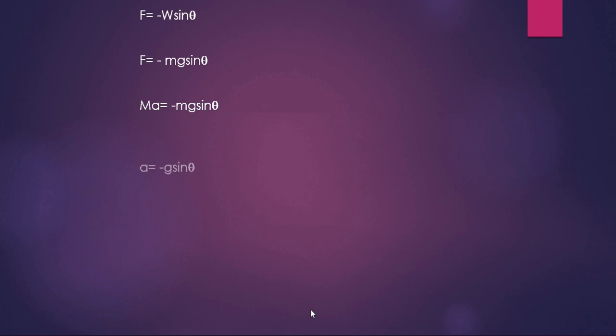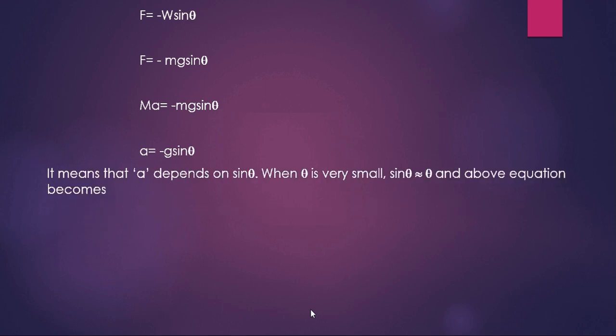Dividing both sides by m, the masses cancel, giving acceleration a = −g sinθ. This means acceleration depends upon sinθ. When theta is very small, sinθ ≈ θ, and the equation becomes a = −gθ. Note: whenever we displace the pendulum, the angle is kept very small — a small displacement means theta will be very small.